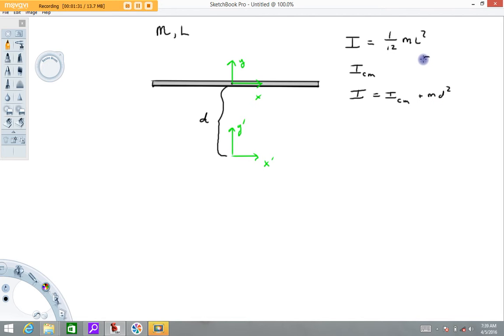So basically what that means is, imagine I've got some sort of object here, and I know the moment of inertia about this axis which goes through its center. Then I move the axis out to here, the moment of inertia of this new object about the new axis is equal to the moment of inertia about its center of mass plus m times d squared.